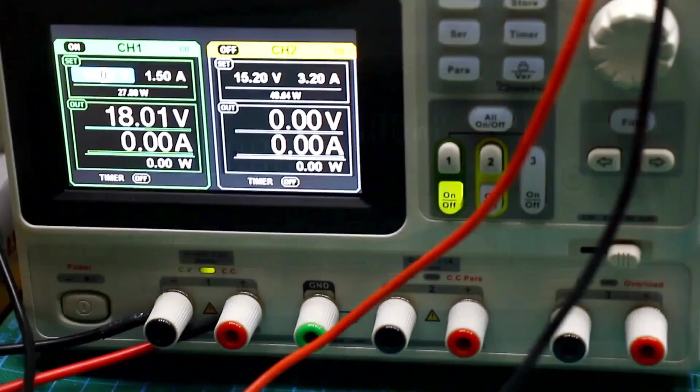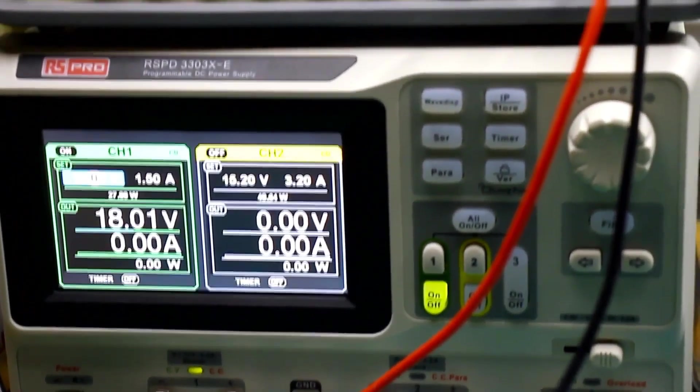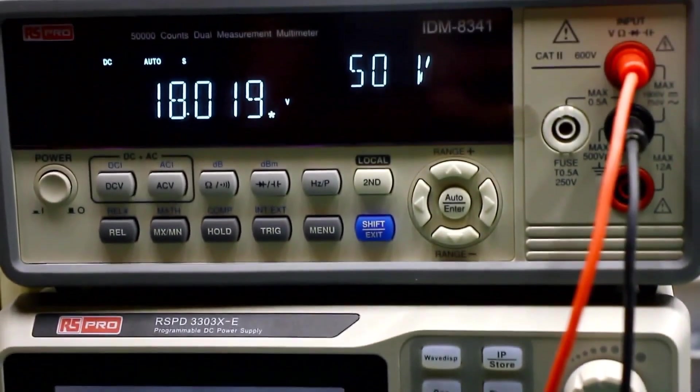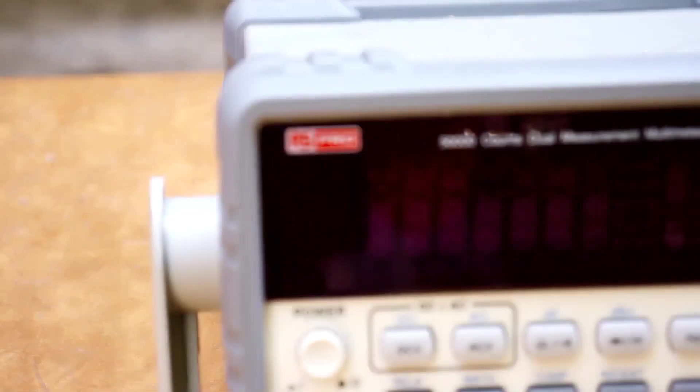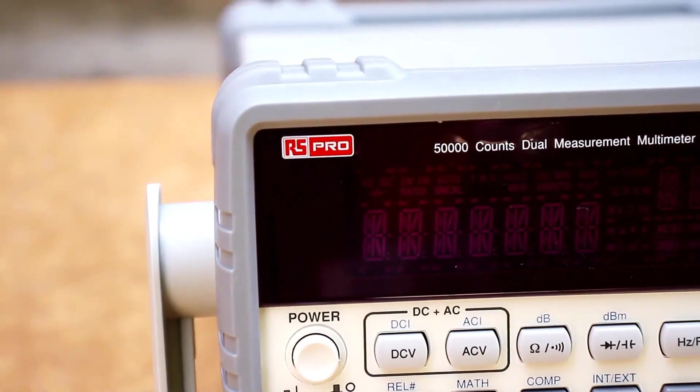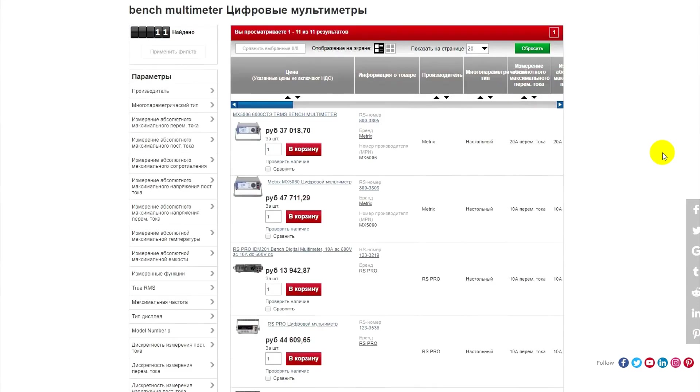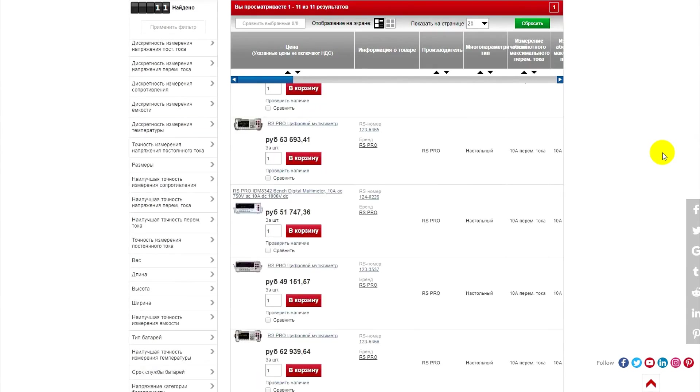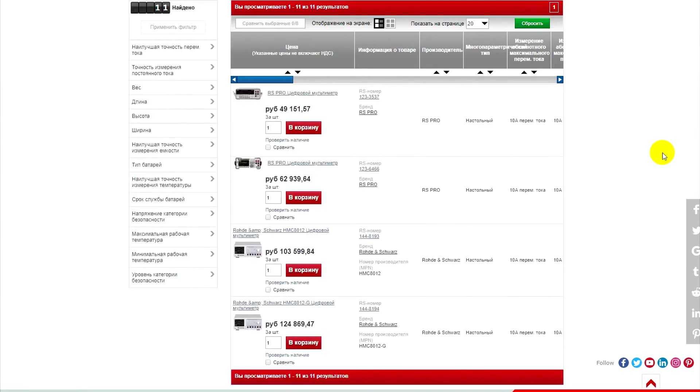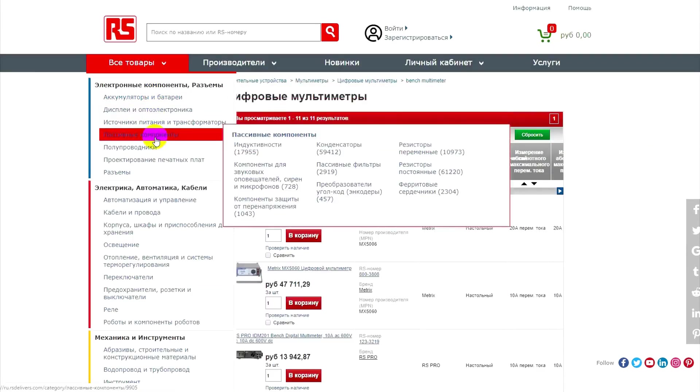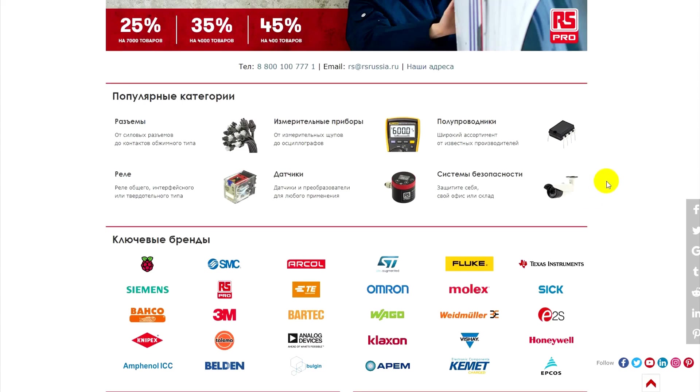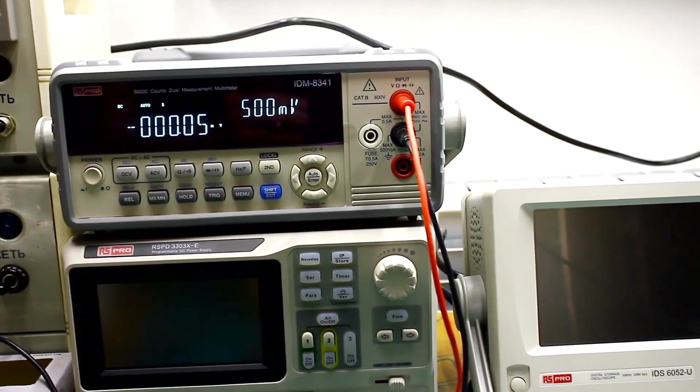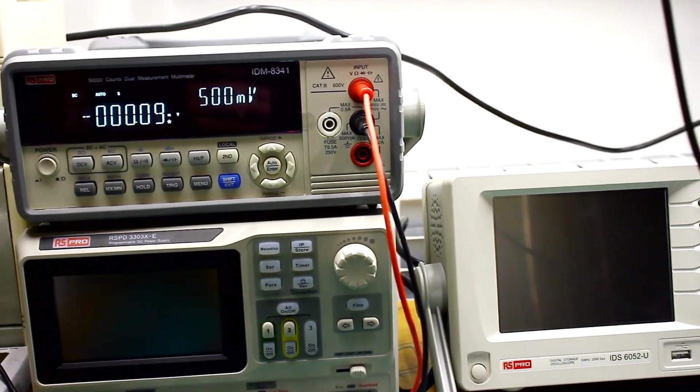This is a precision benchtop multimeter from RS, model EPM 8341. The error of this device when measuring DC voltage is minimal. And this is far from the coolest sample in the RS company's range. On their website, you can find almost any equipment, from budget models to process calibrators, plus original components for your projects. Prices for my laboratory equipment from RS are reduced. Link in the description.